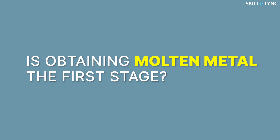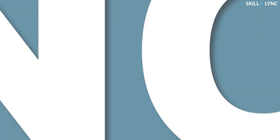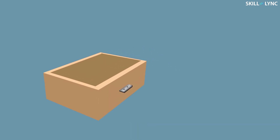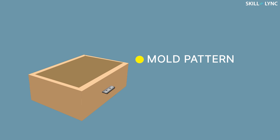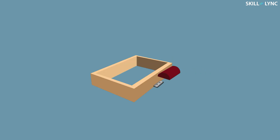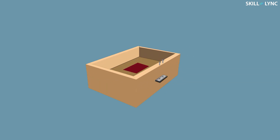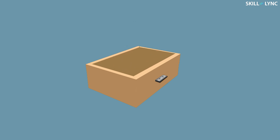There are five main stages in the sand casting process. The first stage is the creation of the sand mold. As you can see in the animation, we take two halves of the mold pattern and two boxes. One half of the pattern is placed on the surface of one box, sand is poured into this box, and pressure is applied for tightly packing the pattern into the sand. After this, the box is inverted and the second box is placed on it. The other half of the pattern is placed exactly on top of the first half, and then sand is poured once again.